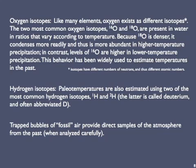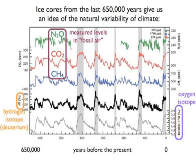Combined, these and other proxies from ice have been used to reconstruct climate over the last 800,000 years, although this graph only goes back 650,000 years. The top three curves show the concentrations of the greenhouse gases nitrous oxide, carbon dioxide, and methane in ancient atmospheres. The fourth dark black curve shows the level of deuterium, H2, and the bottom gray curve shows the level of O18. You can clearly see that higher levels of the greenhouse gases peak at the same time as the peaks in the isotope curves, and these indicate higher temperatures.